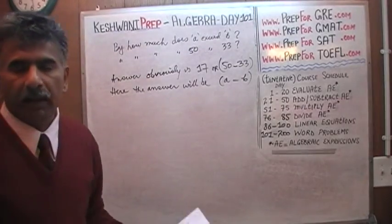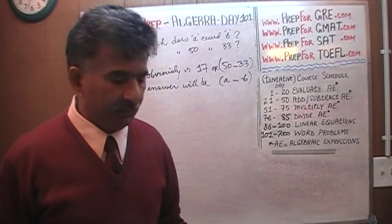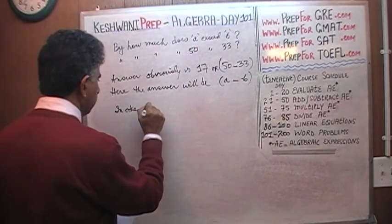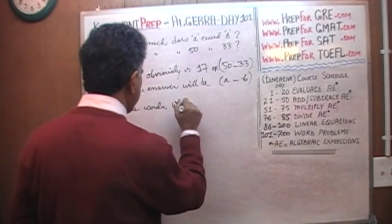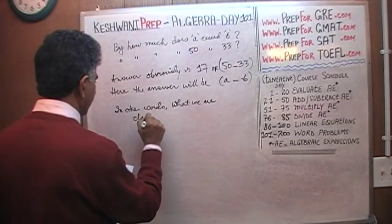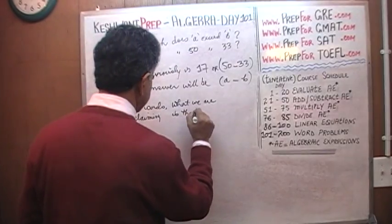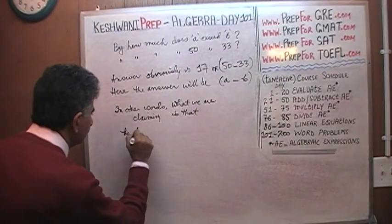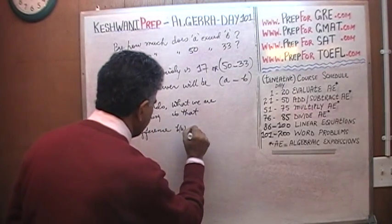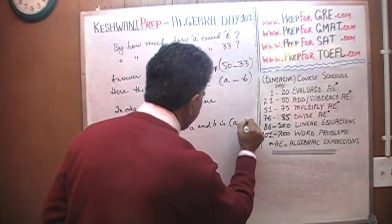Here, the answer will be A minus B. By how much does A exceed B? That's another way of saying, what is the difference between A and B? In other words, what we are claiming is that the difference between A and B is A minus B.